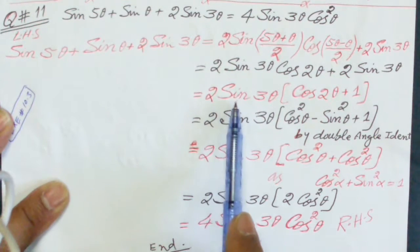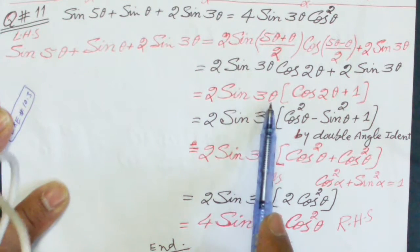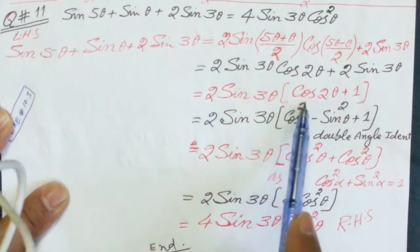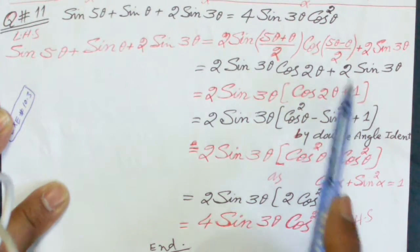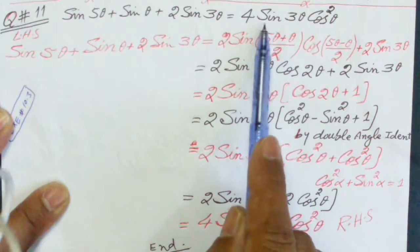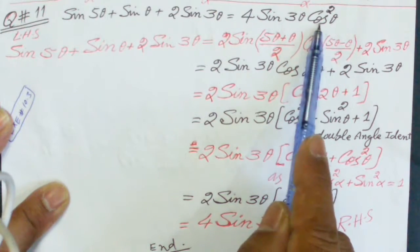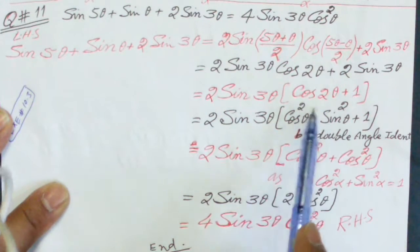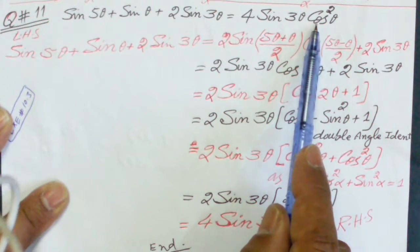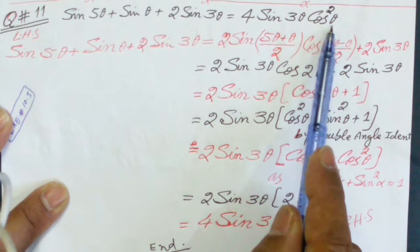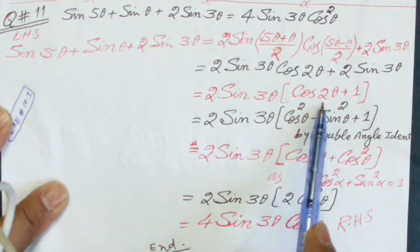After simplification, we factor out 2 sine 3 theta as common, giving us 2 sine 3 theta multiplied by (cosine 2 theta plus 1). To reach the target form of cosine theta whole squared, we note that the angle in cosine theta whole squared is theta, but here the angle is double (2 theta).